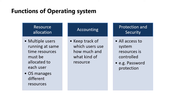Functions of operating system — there are three functions. First one is resource allocation, then accounting, and third one is protection and security. In resource allocation, when there are multiple users or multiple jobs running at the same time, resources must be allocated to each of them. To manage all these resources, the operating system is used. Next is accounting — to keep track of which users use how much and what kind of computer resources, record keeping is used.